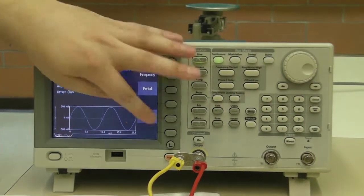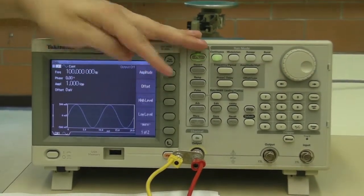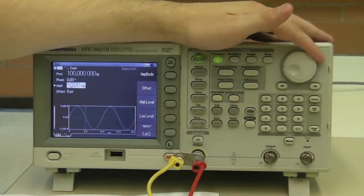On the function generator, begin at a low frequency. Increase the amplitude to about 7 volts. Press on to enable the output.